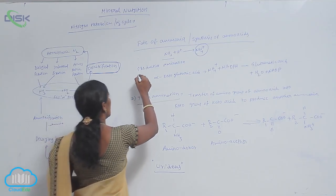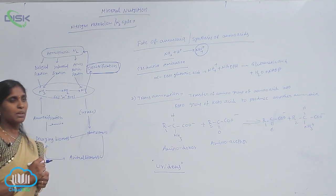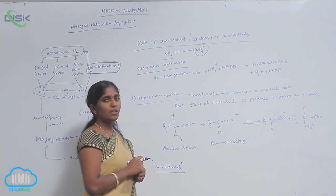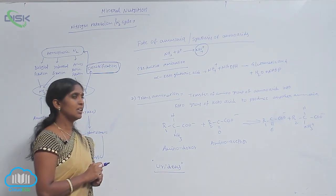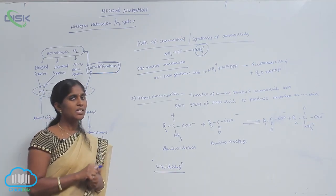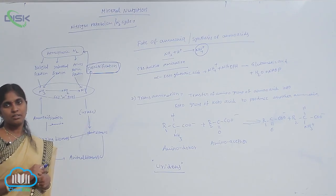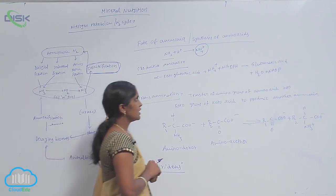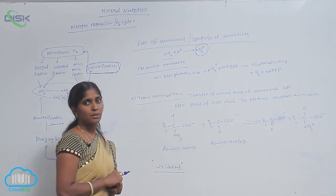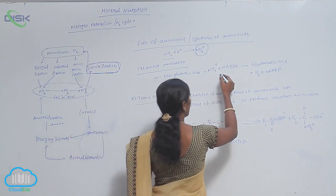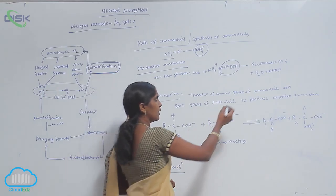The first reaction is reductive amination. Here, alpha-ketoglutaric acid is combined with ammonium ions and converted into glutamic acid. Glutamic acid is an acidic amino acid. This acidic amino acid is produced from alpha-ketoglutaric acid and an ammonium molecule. NADP is also required and gets oxidized, and a water molecule is also released.